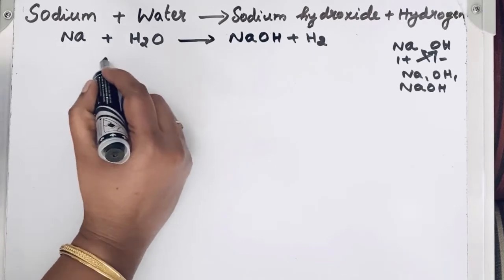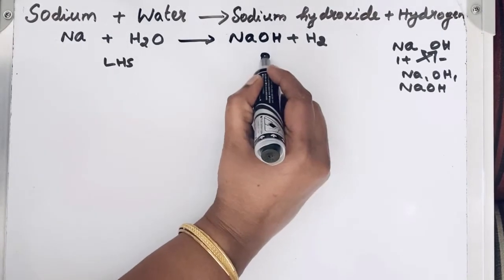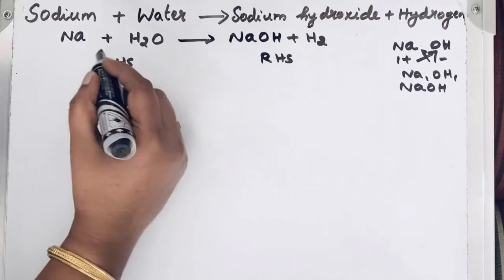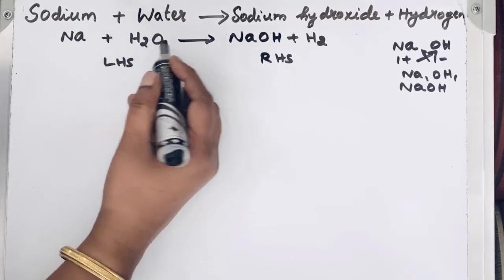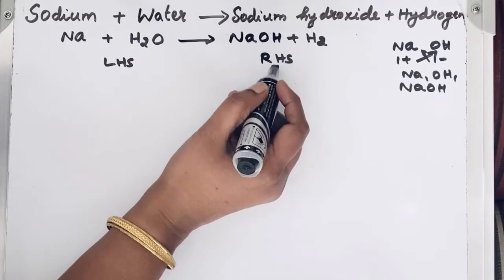So this side is a left hand side and this is a right hand side. So left hand side, reactants are here. When they react, we get the product in the right hand side.